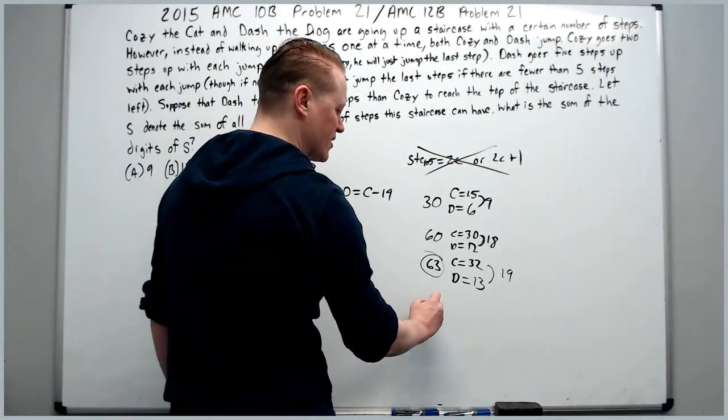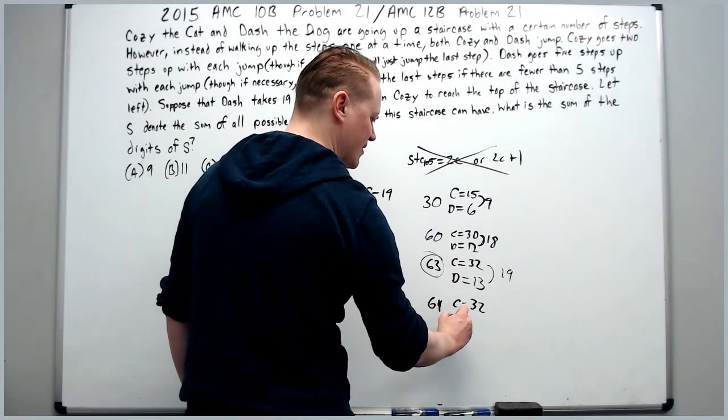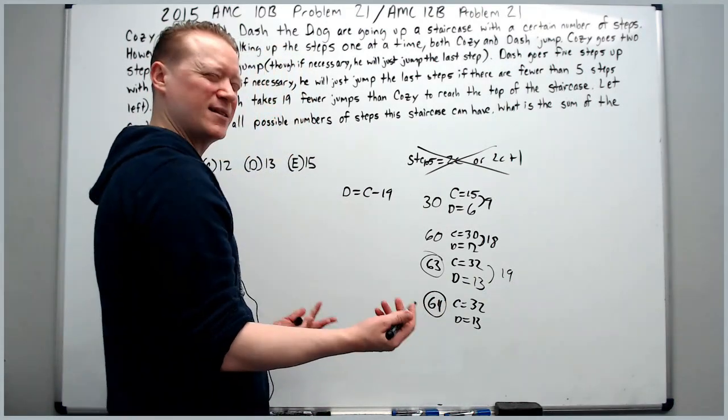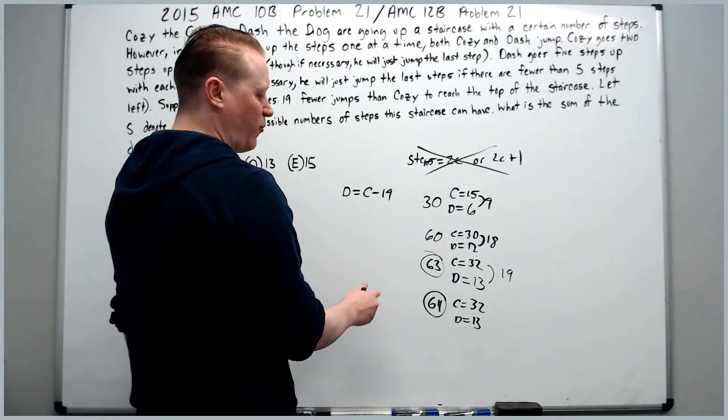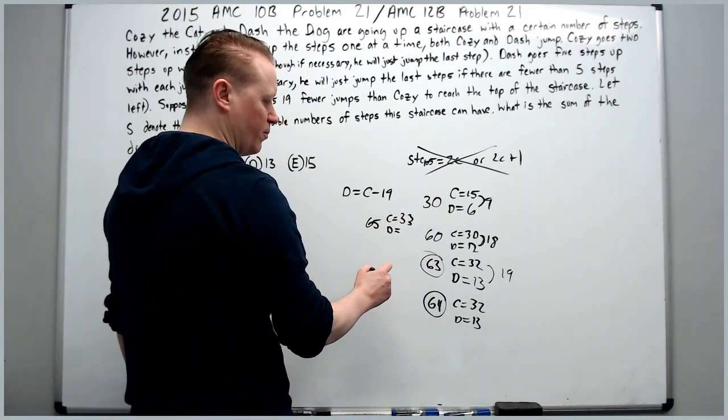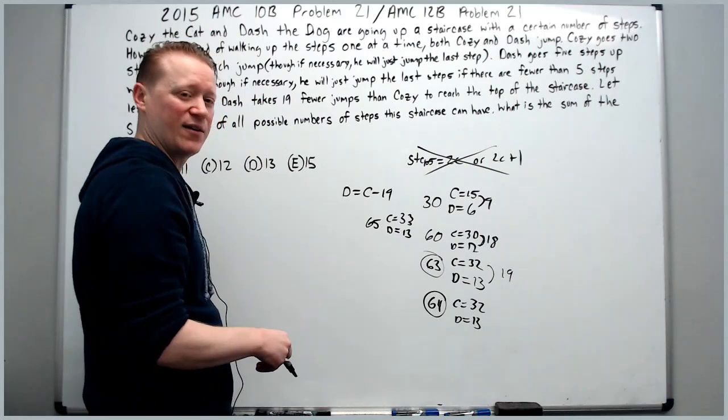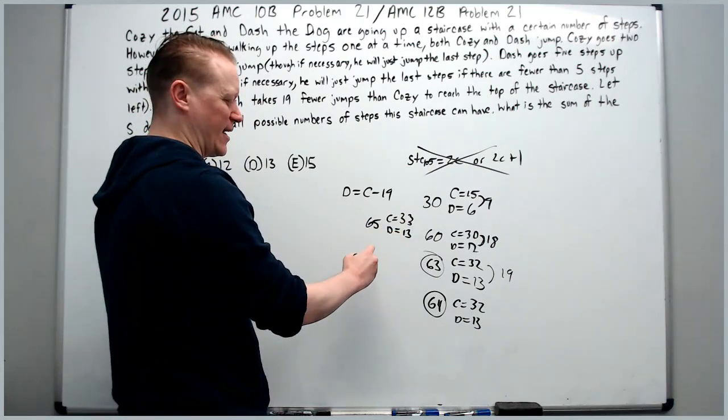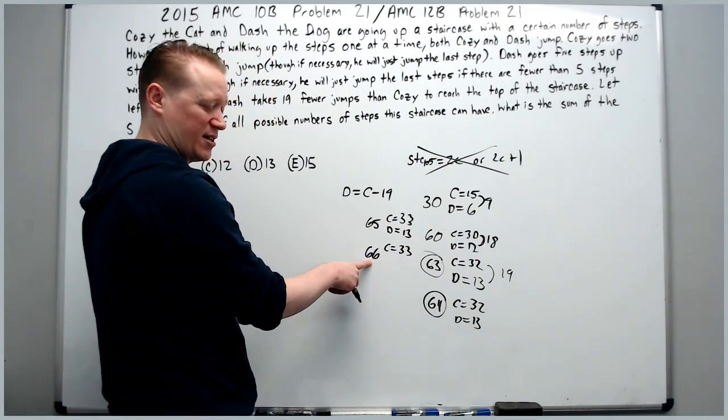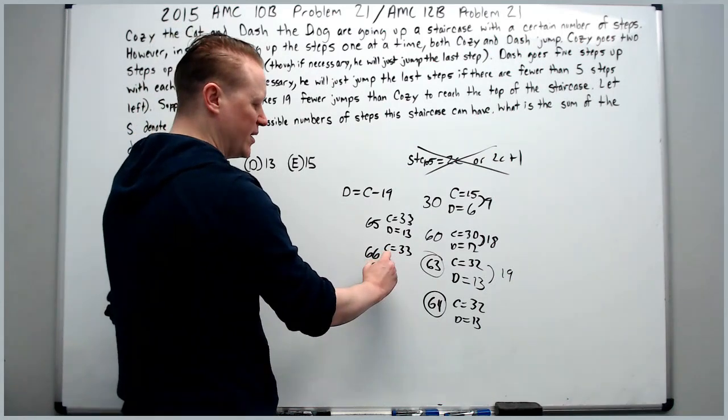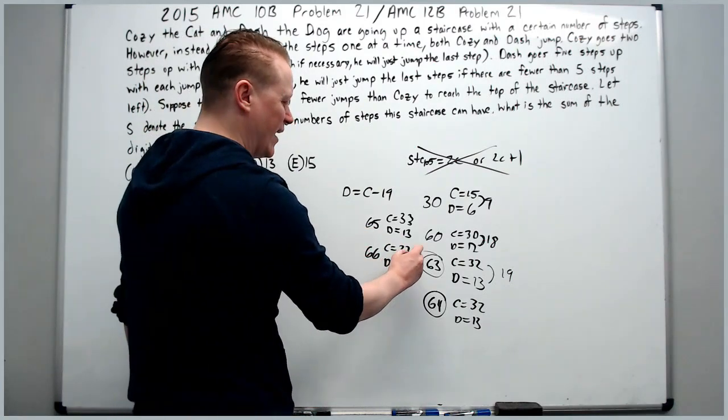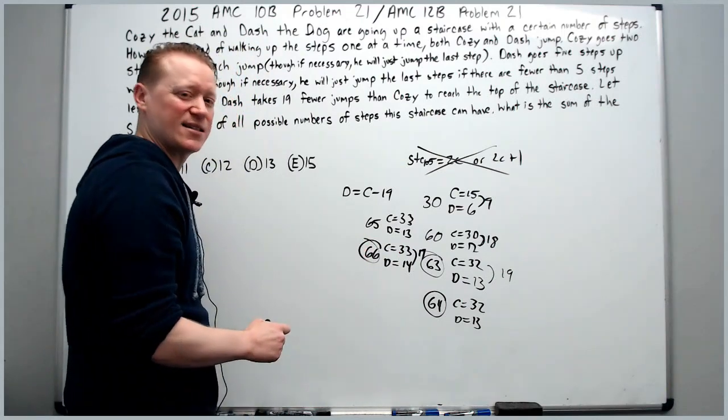And because it works, 64 will also work because it's the exact same jump profile. Cozy still takes 32 and Dash still takes 13. But is this it? We should keep checking. If we go up to 65, Cozy will now be at 33 jumps and Dash will be at 13 jumps still because 65 is 5 times 13. So that one doesn't work, that's a gap of 20. Let's go up to 66. Now Cozy is still taking 33 jumps because 2 goes into here 33 times. But Dash is now going to take an extra jump because it went over 65 and this gap is again 19 and 66 works also.